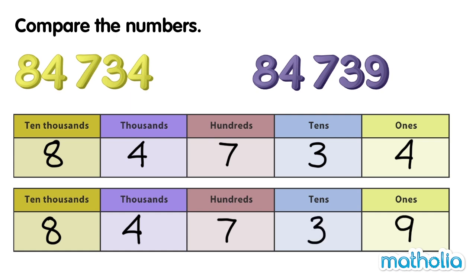We can see that both numbers have 8 ten-thousands, both numbers have 4 thousands, 7 hundreds, and 3 tens. So, we are left to compare the digits in the 1s place.